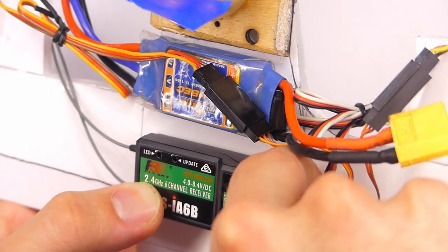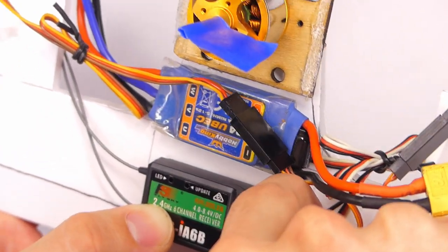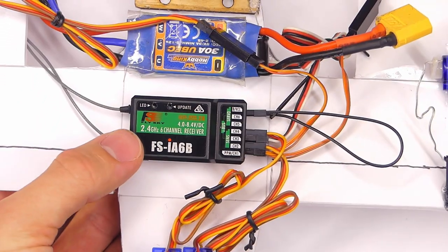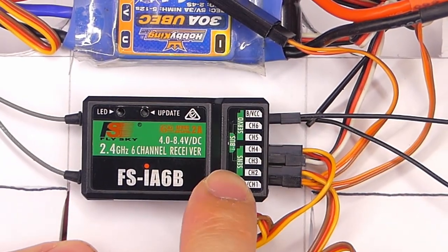We're going to insert it - it should not matter which way it goes in. We're going to put it in just like that, and we have the ESC connected to the receiver.